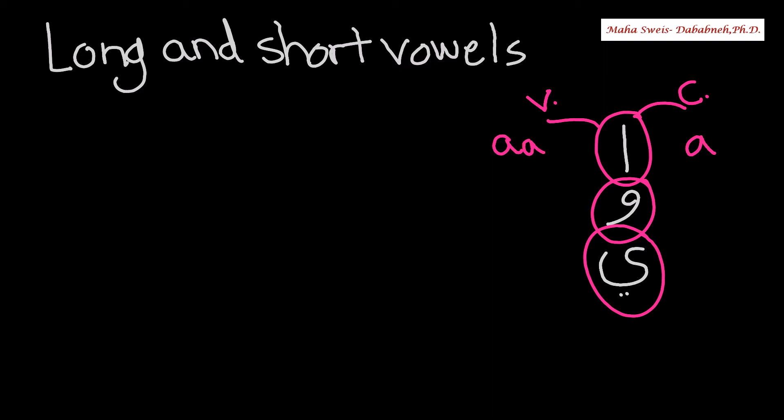If waw is a consonant, you read it waw. If waw is a vowel, you read it as an 'oo' sound. Just try to remember any words in English that have this 'oo' sound so you can remind yourself how to read them.